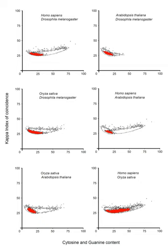Few natural promoters have been identified to date that possess intact consensus sequences at both the −10 and −35 positions. Artificial promoters with complete conservation of the −10 and −35 elements have been found to transcribe at lower frequencies than those with a few mismatches. The optimal spacing between the −35 and −10 sequences is 17 bp.